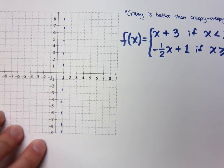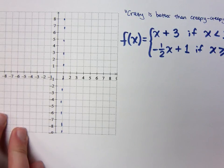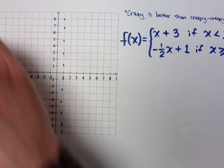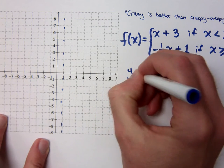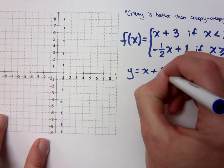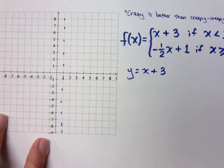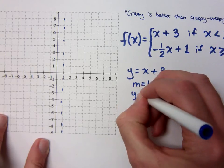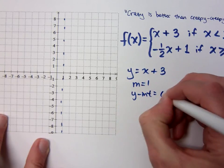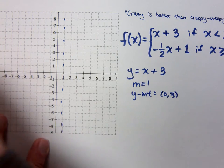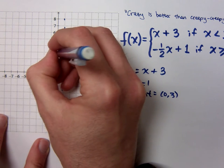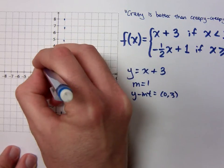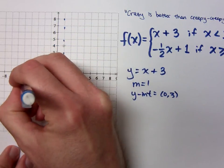So, how do you graph x plus 3? That's the same as saying y equals x plus 3. What's your slope? What's your y-intercept? The y-intercept is at 0, 3, and the slope is 1. So this is my line.